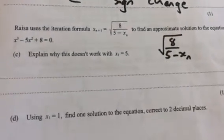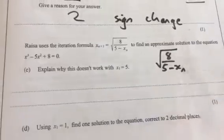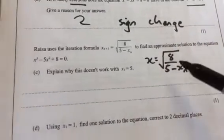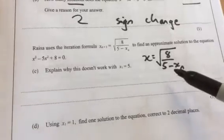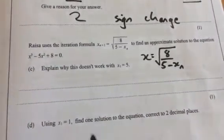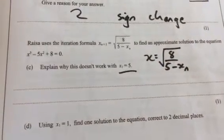Then it says, this individual used the iteration formula of x equal to square root of 8 over 5 minus x to the n. Then in another paper, you might have been asked to show how you'd get from that function to that, but they haven't asked us in this case. They've asked us to explain why it doesn't work when x is equal to 5.